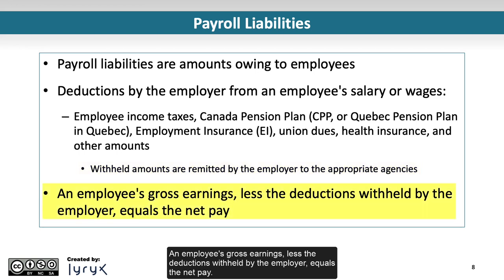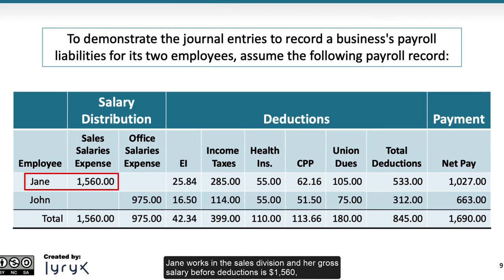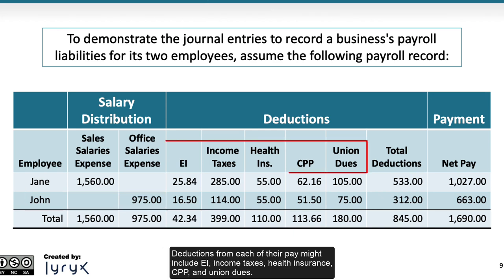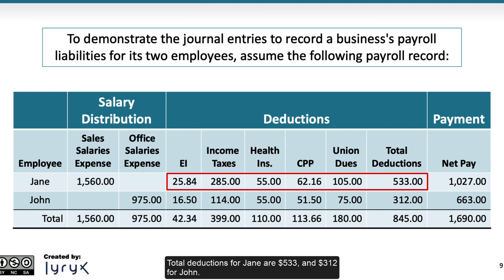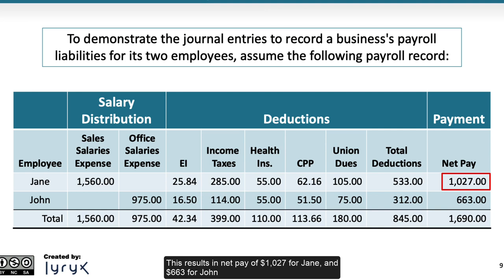An employee's gross earnings less the deductions withheld by the employer equals the net pay. Here's an example of common payroll information for two employees, Jane and John. Jane works in the sales division and her gross salary before deductions is $1,560, whereas John works in the office or administration division and his gross salary is $975 before deductions. Deductions from each of their pay include EI, income taxes, health insurance, CPP, and union dues. Total deductions for Jane are $533 and $312 for John, resulting in net pay of $1,027 for Jane and $663 for John.